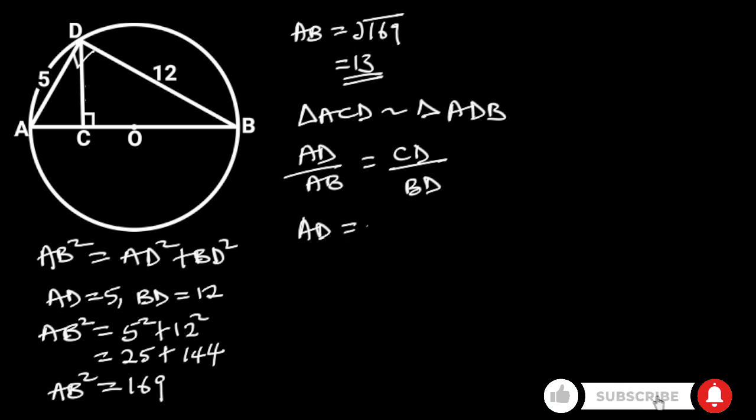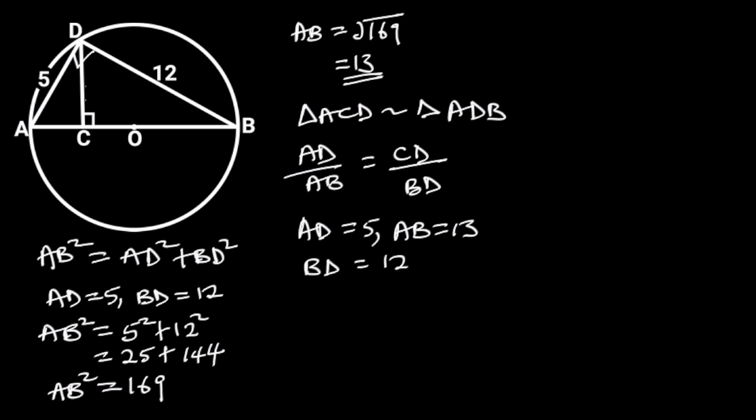AD is equal to 5, AB is equal to 13, and BD is equal to 12. Substituting these values in the above equation will give us 5 over 13 is equal to CD over 12. By cross-multiplication,